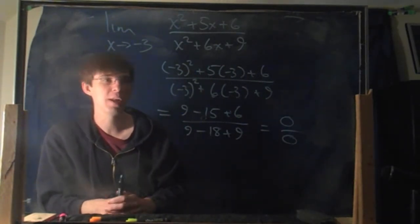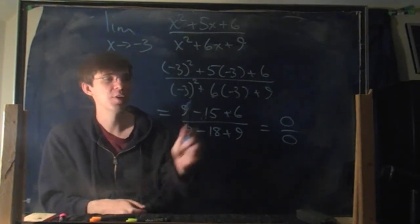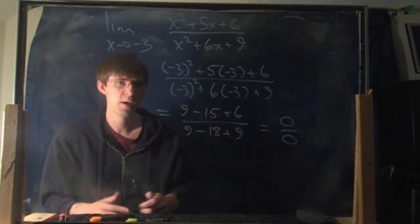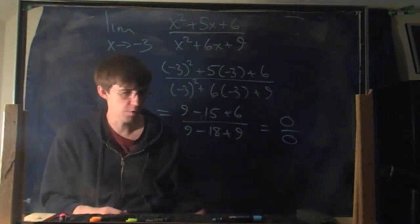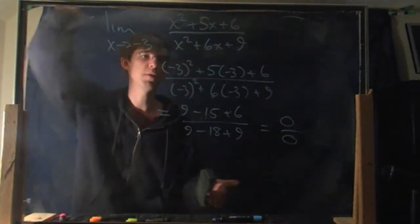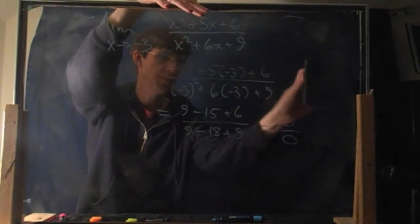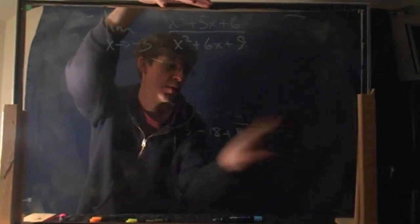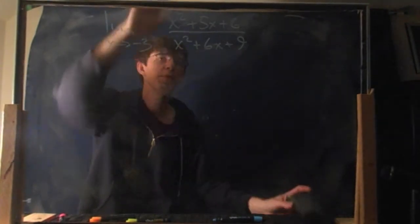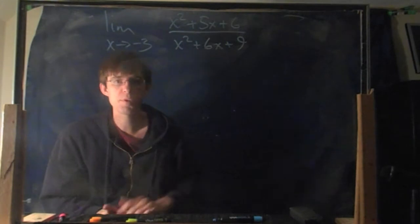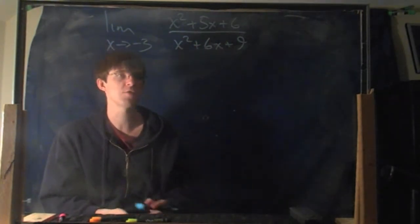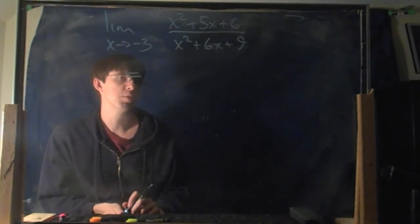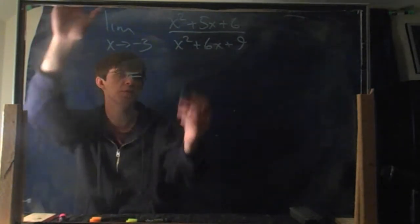Here's a little secret: most examples in this class will give you zero over zero, because any other example is kind of easy — you plug it in and whatever you get is the answer. I'm going to make you work for it. When you get zero over zero, go back and simplify. In the previous example we did FOIL; here we can do the opposite — factoring. This is really important, so get into factoring.